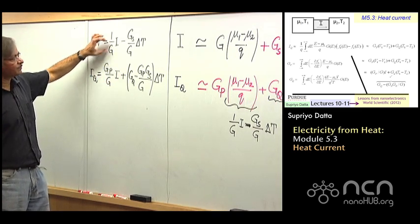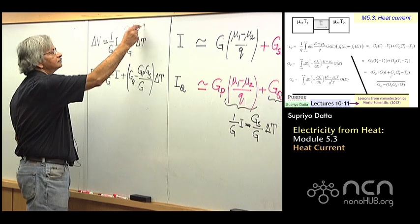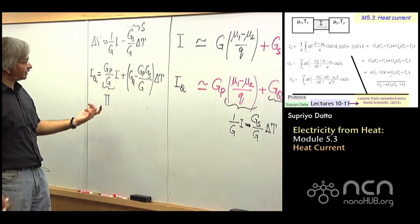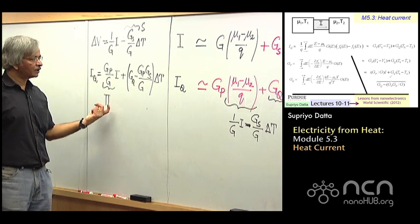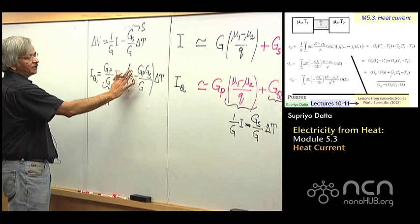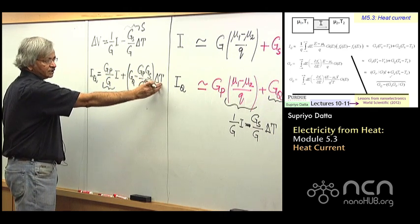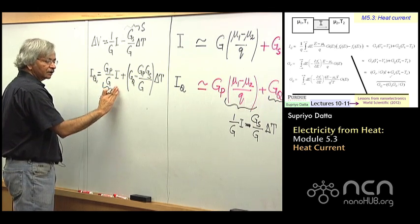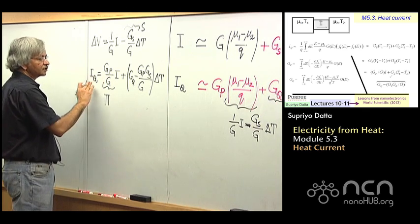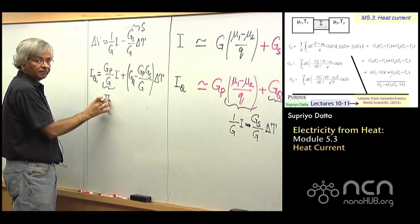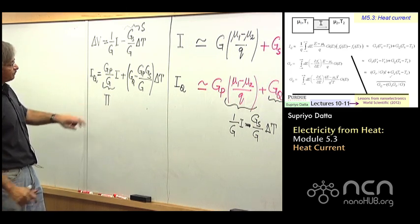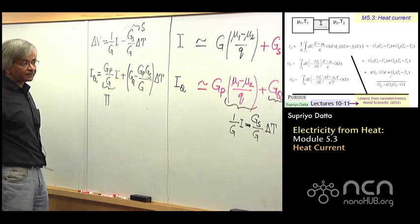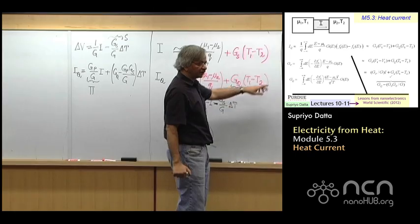But here everything has a name. This of course is the resistance. That's the Seebeck coefficient. This is the Peltier coefficient. Again, these are things, if you Google a material, you'll find information about the Peltier coefficient. What is it? Well, it's like if you had a material with no temperature difference across it, delta T is zero, then the ratio of the heat current to the regular current. So how much heat current is carried by a certain amount of current? That is what you'd call the Peltier coefficient. And the interesting thing you'll notice is the Peltier coefficient is Gp over G. Seebeck coefficient is Gs over G.